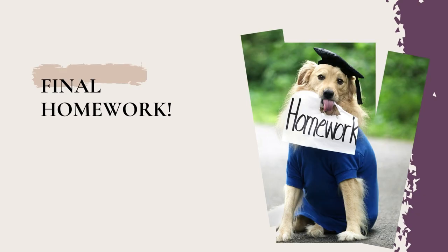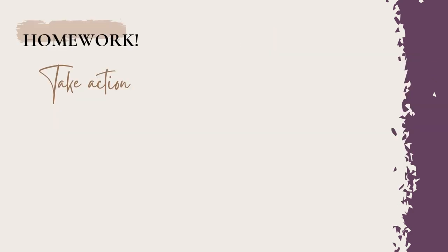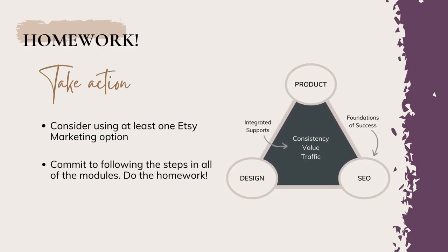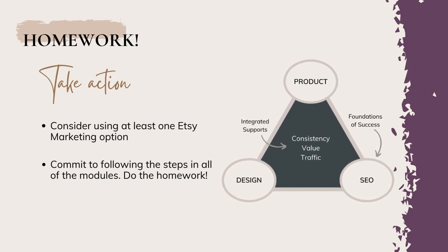And just because this is the last module, don't think I forgot about homework. Here's your final homework assignment: take action. Consider using at least one Etsy marketing option. At a minimum, turn on those automated sales coupons that Etsy can send out for you — particularly for abandoned cart and favorited items — it's a great way to incentivize customers who are clearly already interested to close that sale. Then start building on the rest when you get more comfortable. Commit to following the steps in all of the modules and do the homework, because it will help you scale faster and make decisions that give your shop the best chance of success.